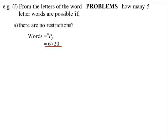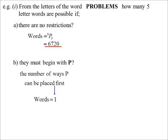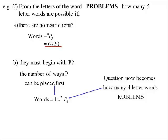Now the words have to begin with the letter P. Look after the restriction first: P goes in the first spot — one way to do that. Now I need another four letters from ROBLEMS, so that's 7P4, which equals 840.